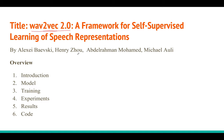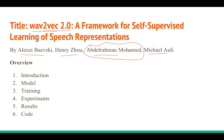The authors are Alex Baevski, Henry Zou, Abdulrahman Mohamed, and Michael Auli. Abdulrahman Mohamed is one of the key figures in using deep learning for speech recognition — his 2009 paper used deep neural networks for phoneme recognition on TIMIT and showed a huge boost in accuracy, which many consider the first breakthrough of deep learning in speech. He was also a student of Geoffrey Hinton.